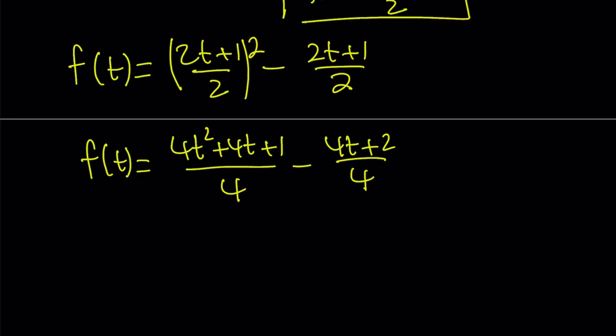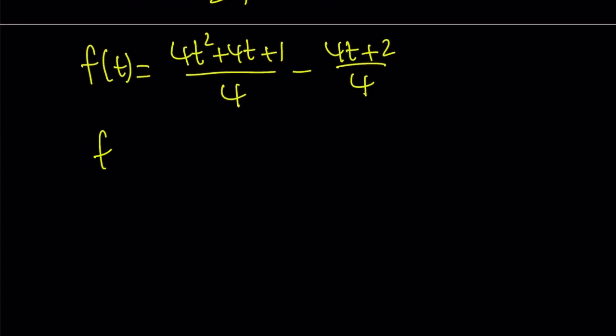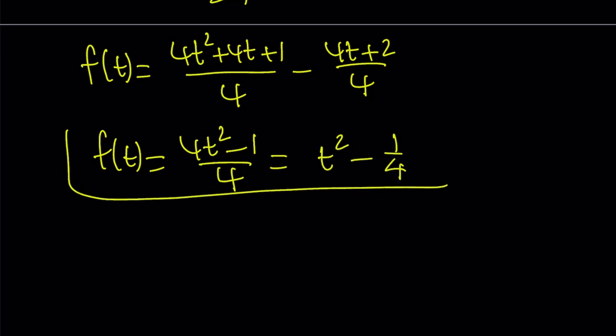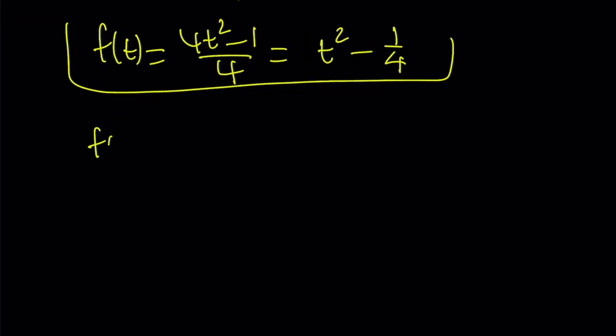Now, if you subtract those, 4t is going to cancel out. And you're going to get f of t equals 4t squared minus 1 over 4. Obviously, you can go ahead and separate these and write this as t squared minus 1 fourth. But since this is f of t, and I want to write f of x,